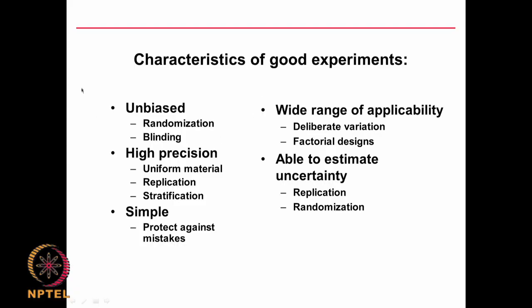Characteristics of good experiments should include: unbiased, meaning randomized and blind; high precision with uniform material and the same raw material; replication; blocking; simplicity to protect against mistakes; and wide range of applicability. We should be able to estimate uncertainty — that is error — and obtain confidence limits. We do this by replicating and calculating the standard error. Randomization is also very important to account for uncertainty.